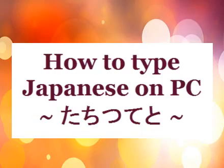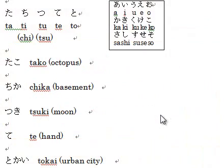みなさん こんにちは。かずえです。How to type Japanese on the PC? Today's lesson is た、ち、つ、て、と.